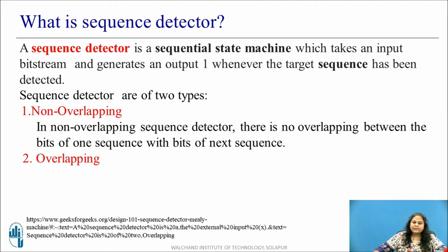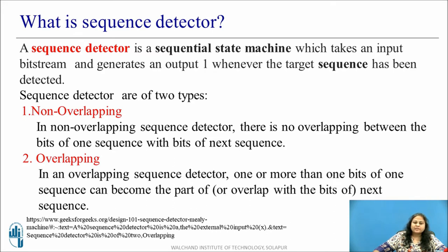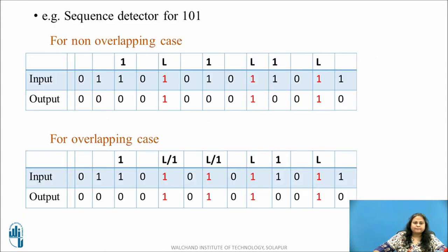In a non-overlapping sequence detector there is no overlapping between the bits of one sequence with the bits of the next sequence. In an overlapping sequence detector, one or more than one bits of one sequence can become part of the next sequence. Now consider the example of a sequence detector to detect the sequence 1, 0, 1. First consider the non-overlapping case.